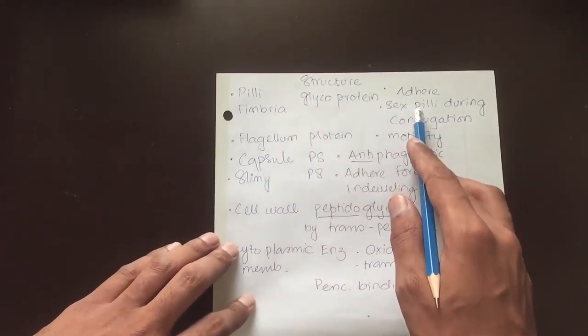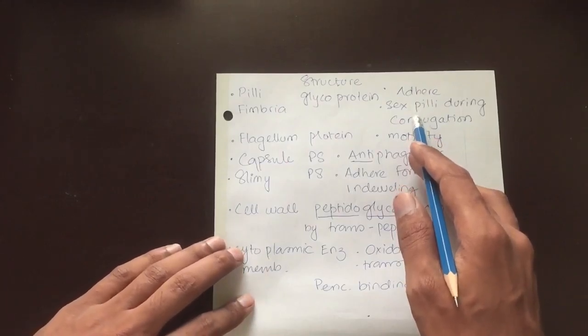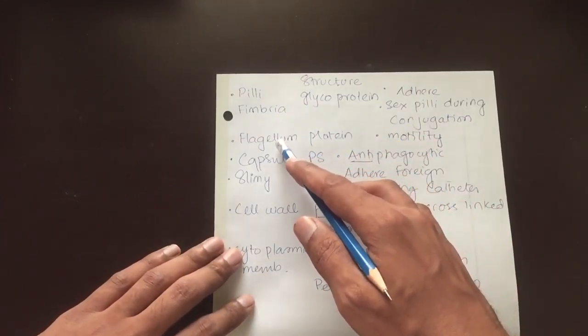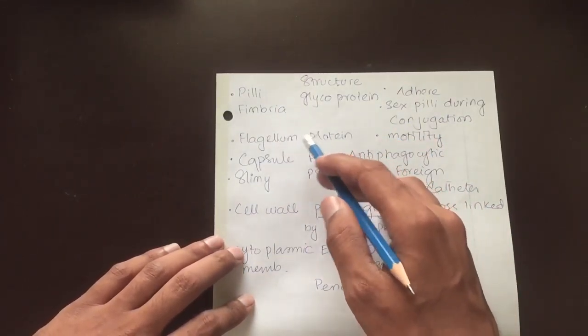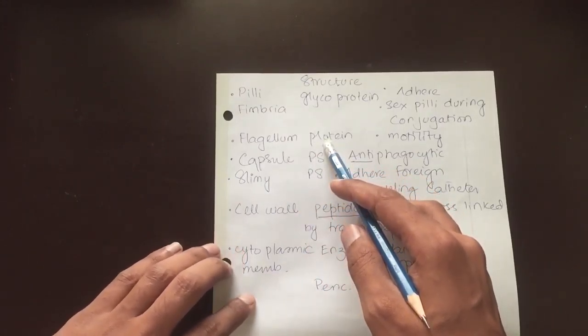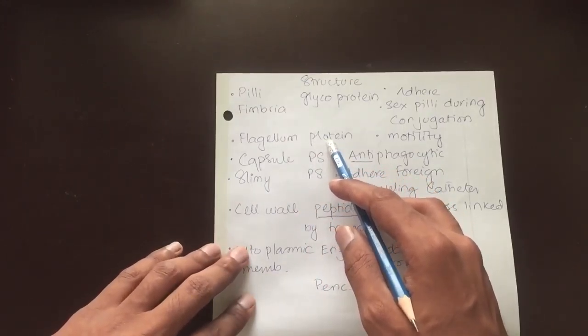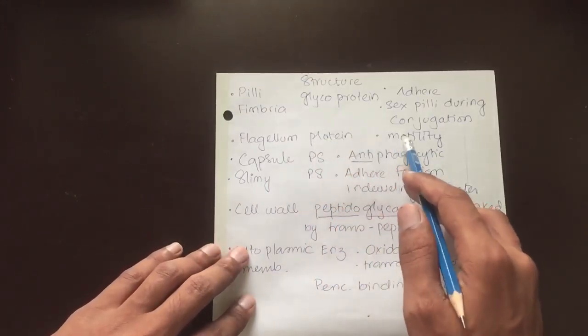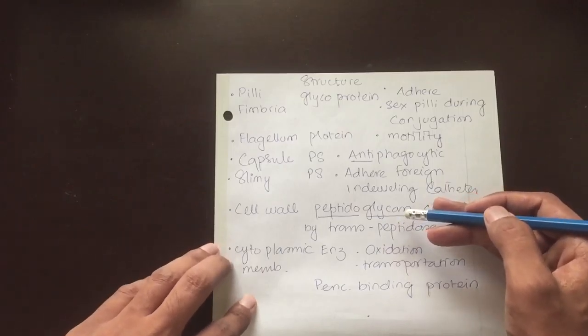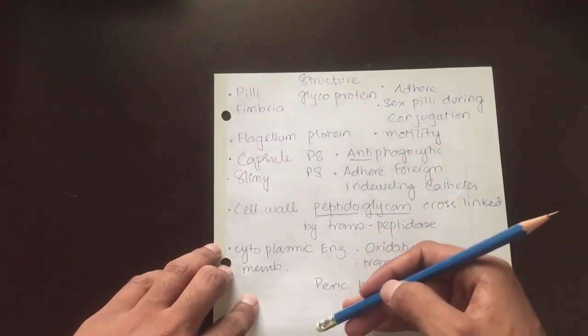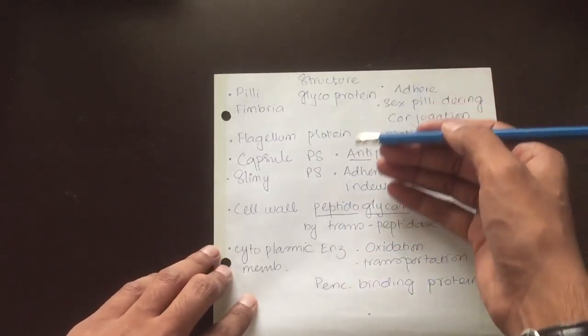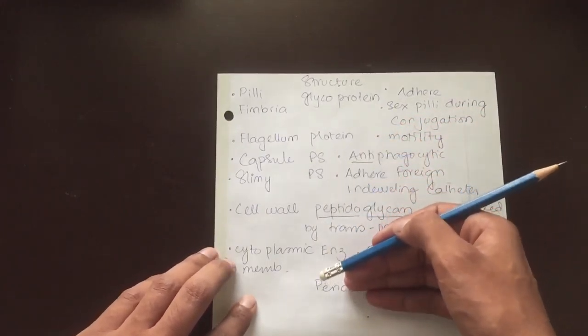Flagellum is a protein which is present outside the cell as an appendage and it helps in motility. Then inside the cell, or into the cell wall, we go from outside to inside the cell.